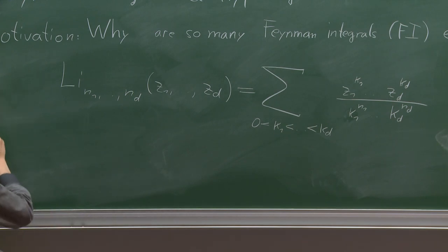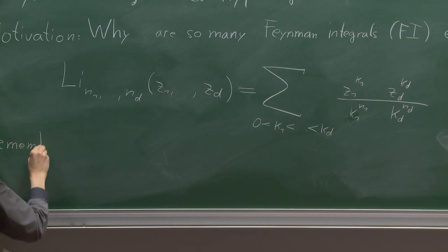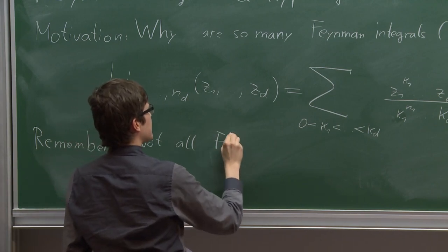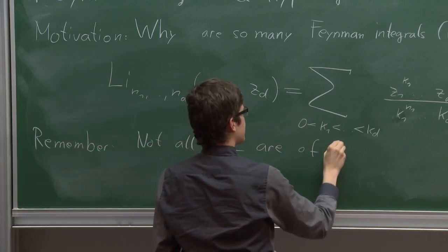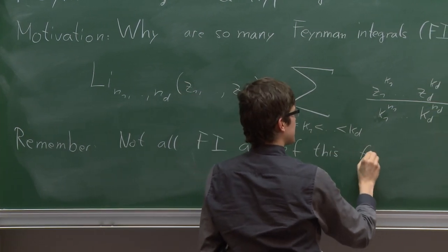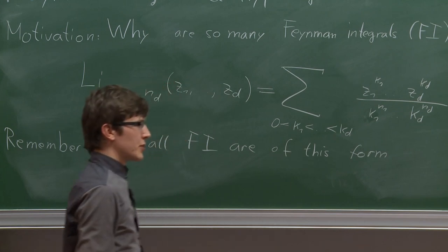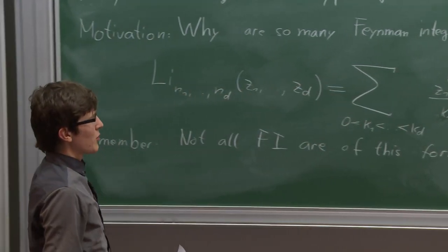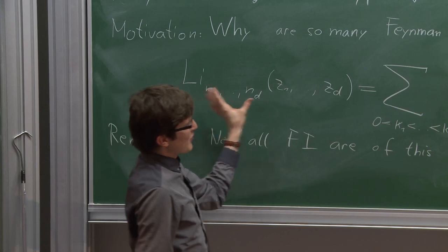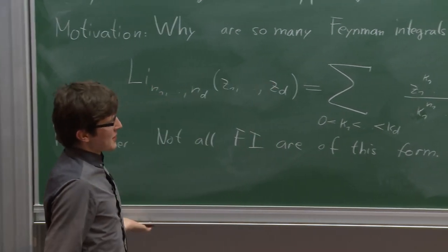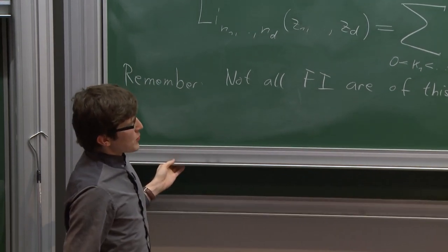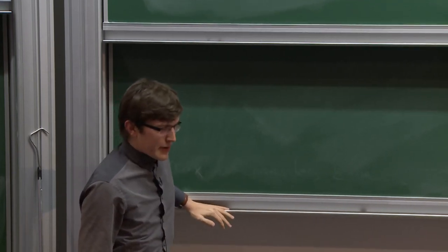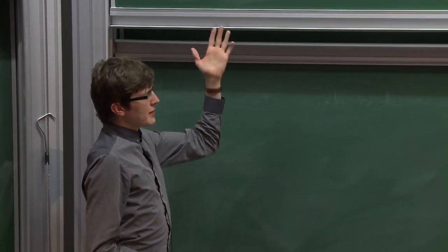We have seen examples in Ruth's talk where these functions show up in Feynman diagram calculations, and it's still somewhat mysterious why so many of them do. Not all Feynman diagrams are of this form — we know explicit counterexamples. In the whole world of Feynman diagrams, this is probably a set of measure zero, but the surprise is that for most things relevant for physical calculations, you get very far with just these.